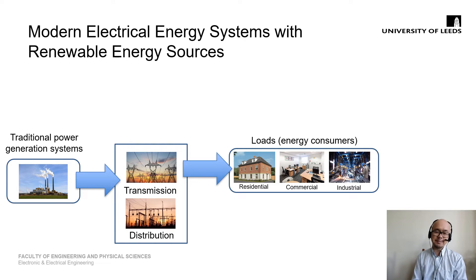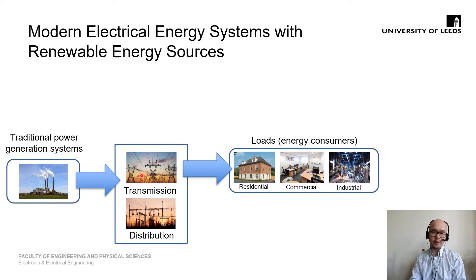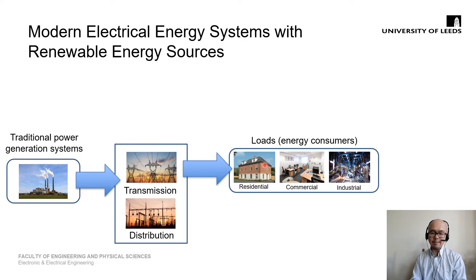Traditionally, power systems are based on a structure where power plants are based on fossil fuels mainly. The power generated by the power plants flows in one direction — from the power plant level through a transmission and distribution network — before the power is supplied to the load, which includes residential, commercial, and industrial consumers.